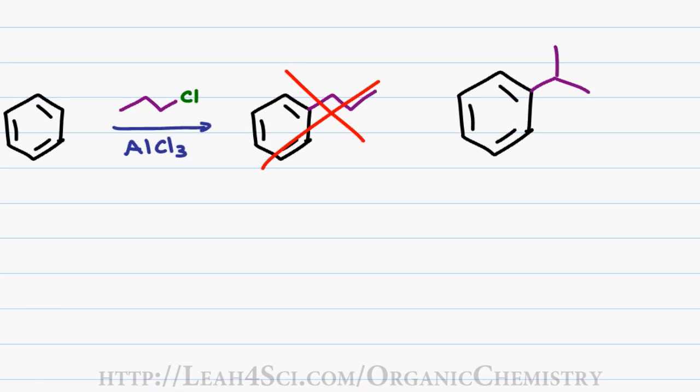This is actually one of the three limitations of the Friedel-Crafts alkylation reaction. When you study activators, deactivators and directing effects, you're going to see that an alkyl group is considered activating. This means that when you do Friedel-Crafts alkylation one time, the ring will be activated and another alkyl group will add and another group will add, making it somewhat impossible to control the reaction.